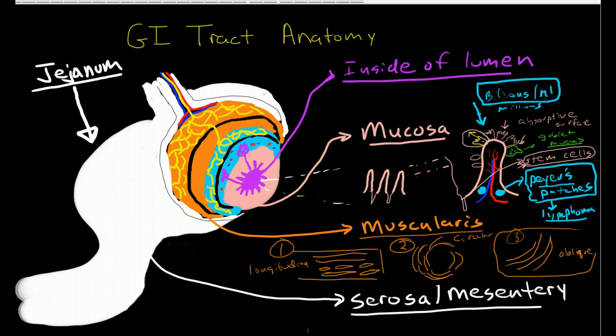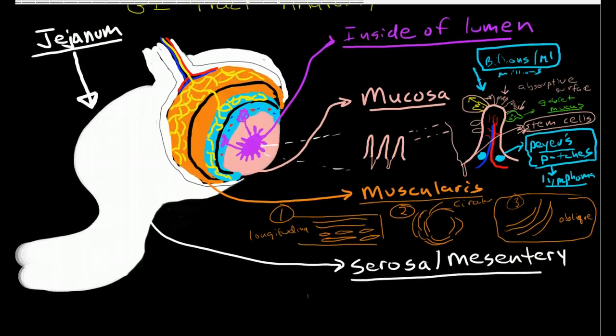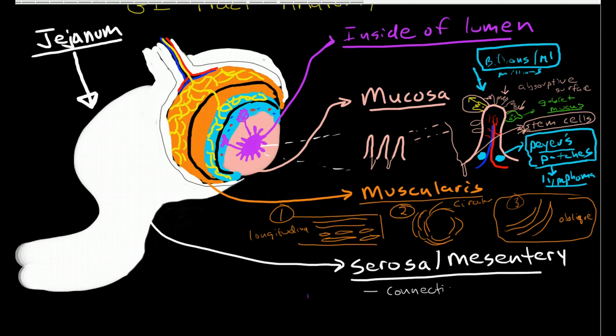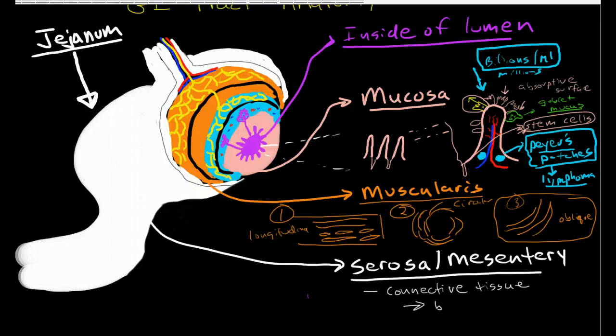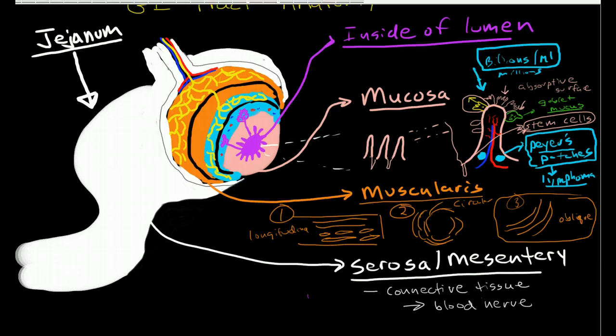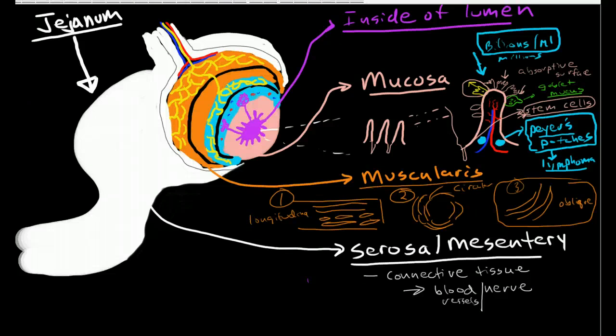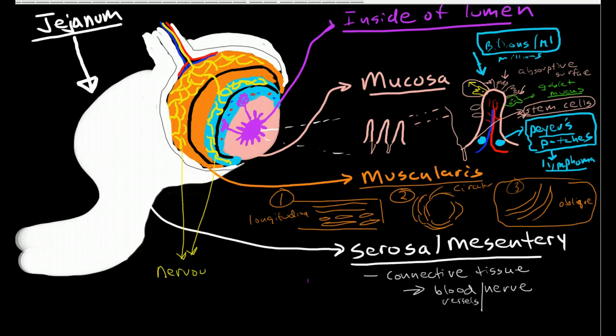And then outside the outside layer is the serosa, and the serosa is just our blood vessels and nerves. I wanted to point out one other aspect of the anatomy of the gut, and that is these layers of nerves. So there are two layers here, and this is the nervous system of the gut, or the enteric nervous system.